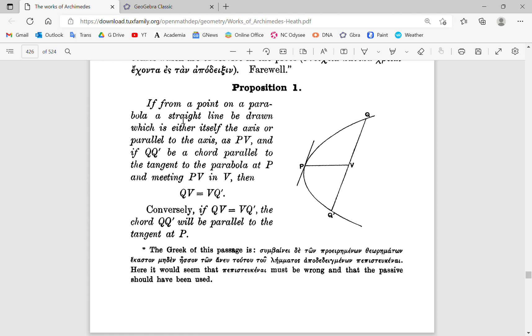Let's see what the proposition says. It says if from any point on this parabola, let's say a point P, a straight line PV be drawn which is either itself the axis of this parabola or parallel to the axis as PV. And if QQ' is a chord that's parallel to the tangent line, then the length of QV will be equal to VQ'.